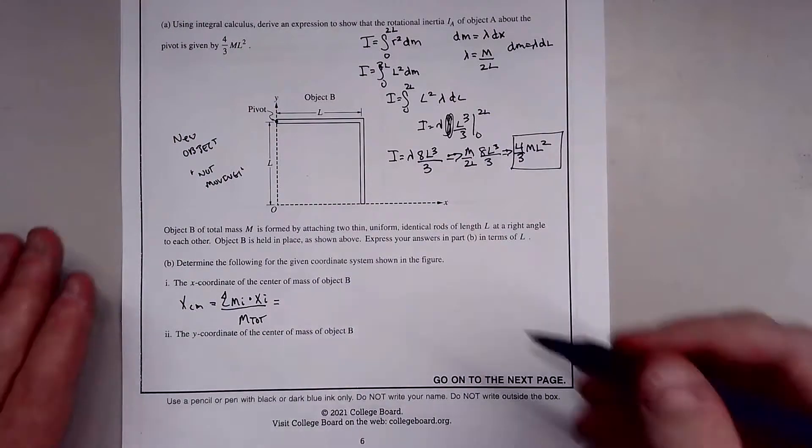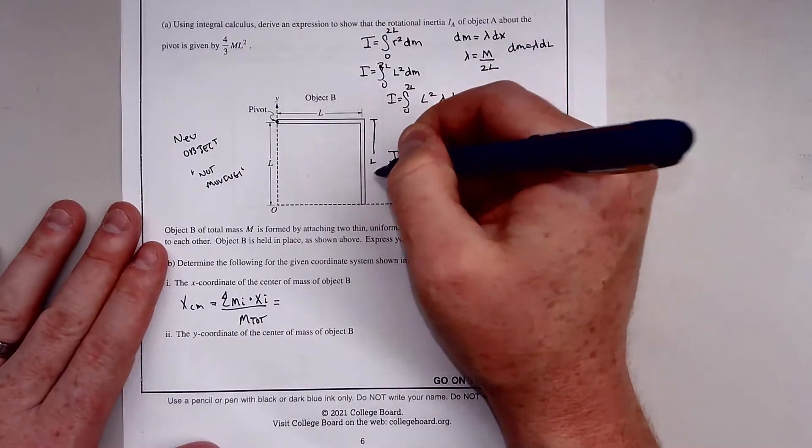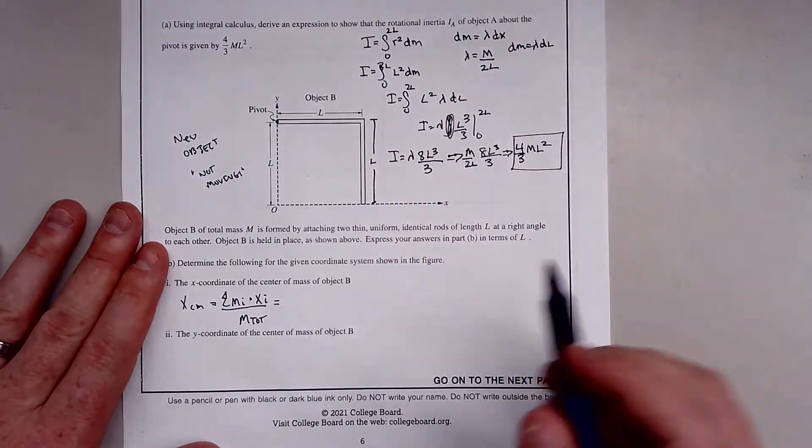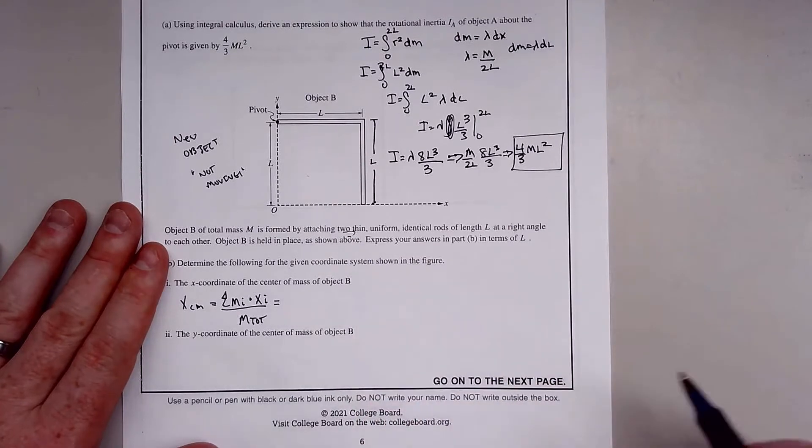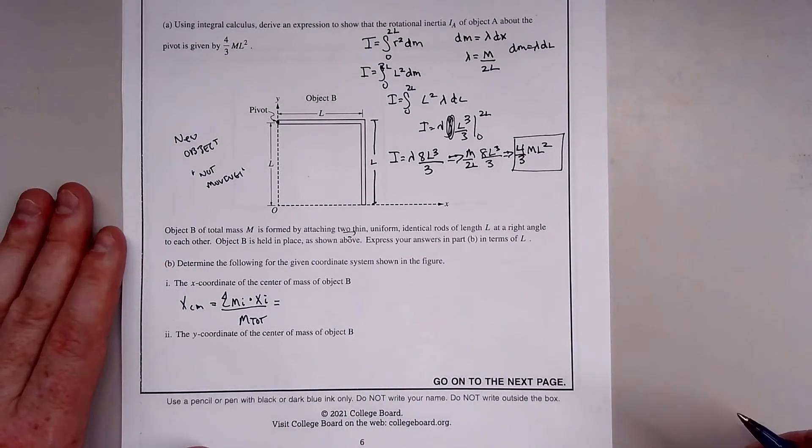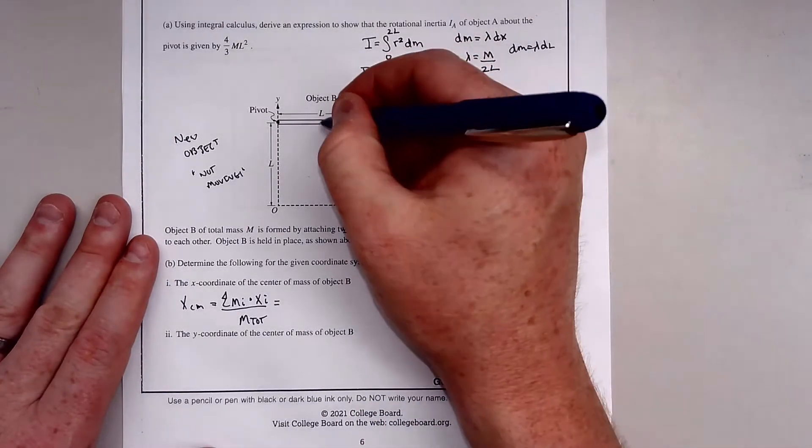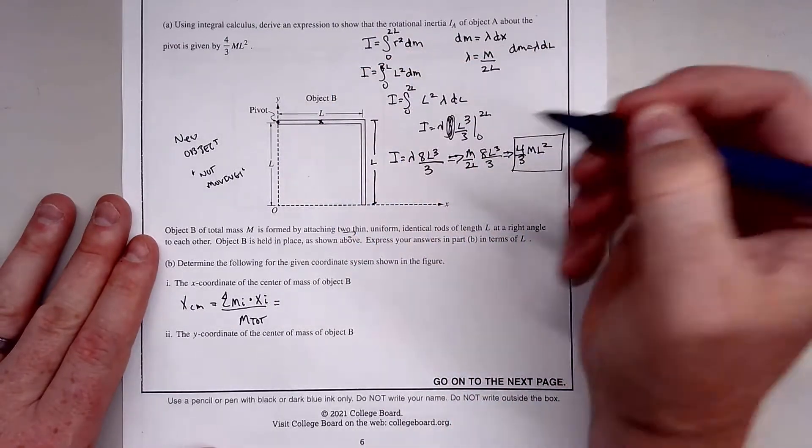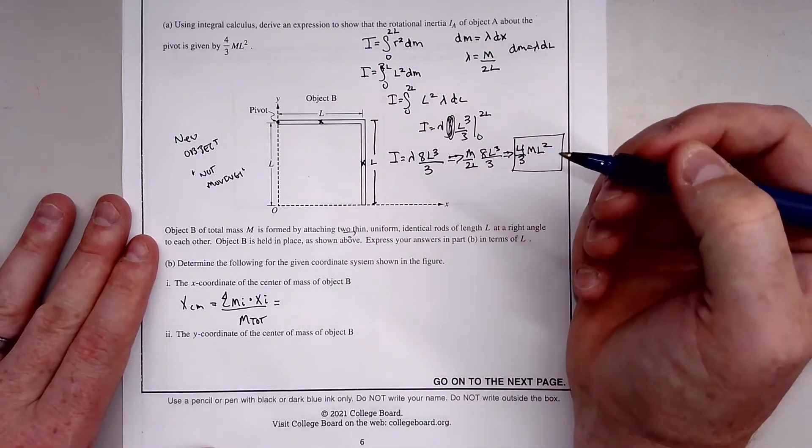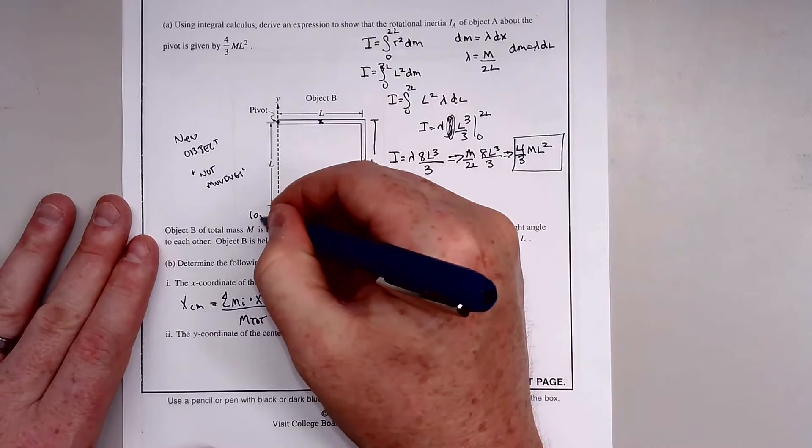We have two different pieces here. Let's look at their center of mass. This one's obviously in the center, and this one's in the center. We have two coordinates here. Let's go from 0,0.